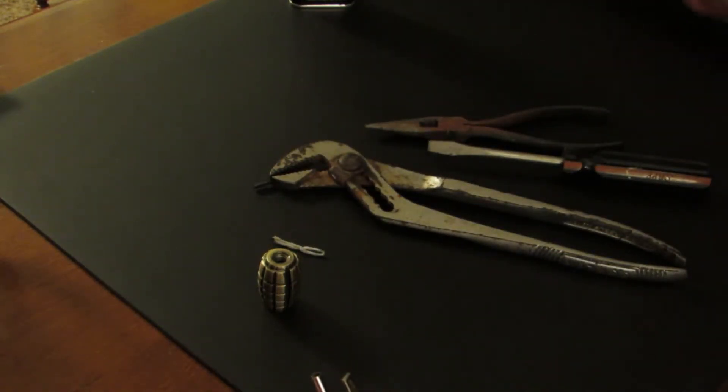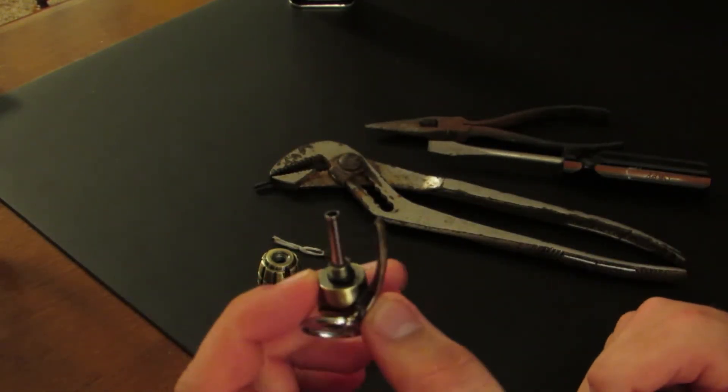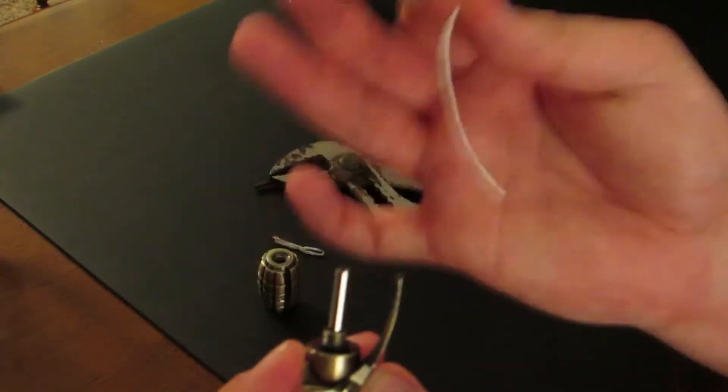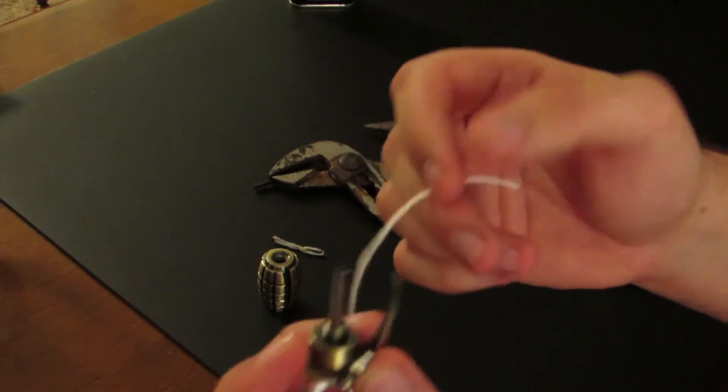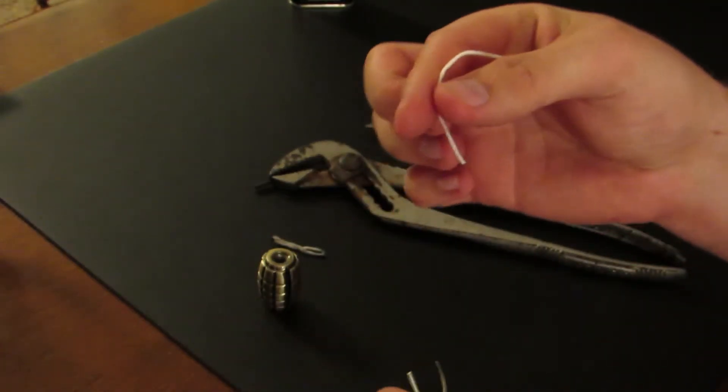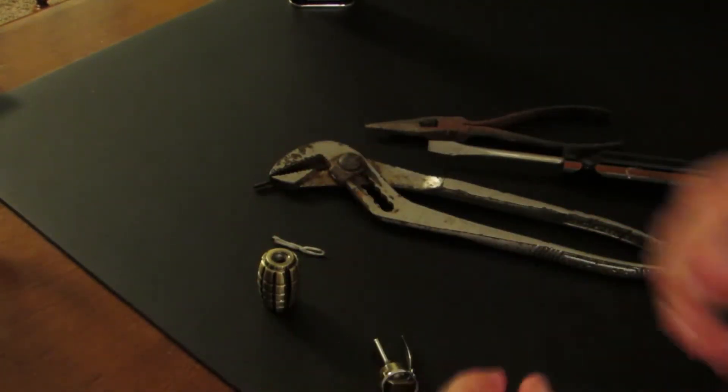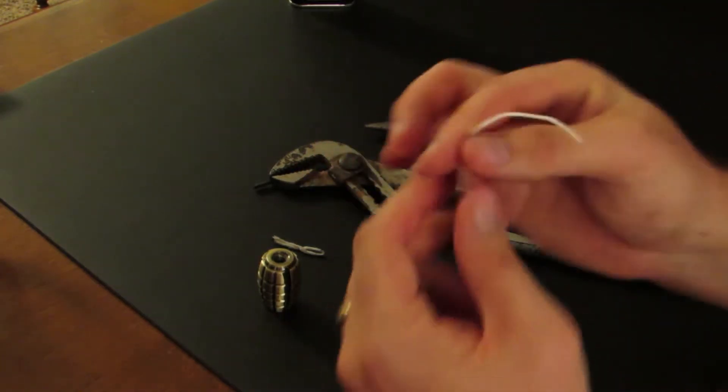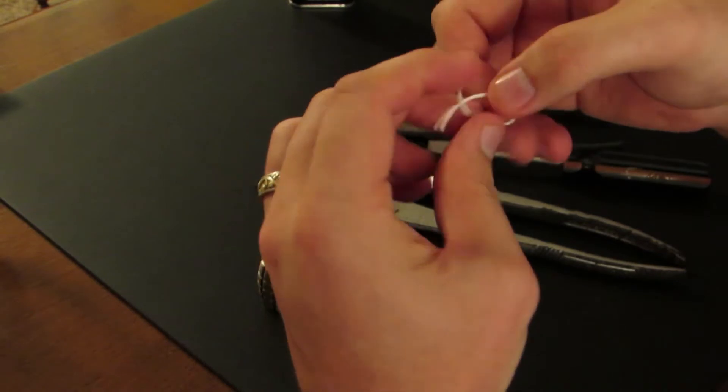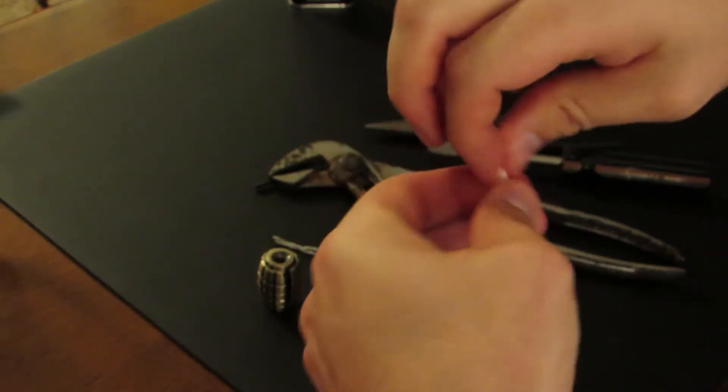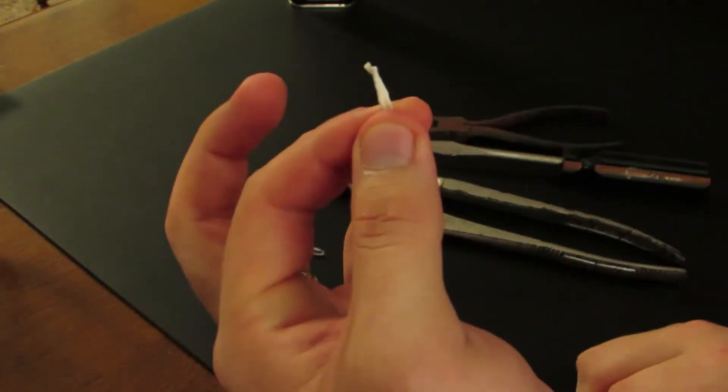Now you can replace it with one of two things: you can replace it with a Zippo lighter wick or you can replace it with twine. We found that the twine works better sometimes than the Zippo wick. You're going to take this and you're going to fold it in half. Try to make sure it's a little even.